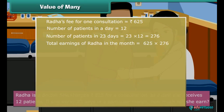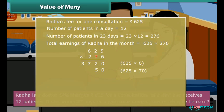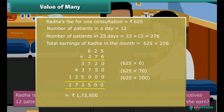Total earnings of Radha in the month is 625 × 276. Let us learn another technique of multiplication: first, multiply 625 by 6; then multiply 625 by 70; finally, multiply 625 by 200. We add the three products to get 1,72,500 rupees. Therefore, Radha earns 1,72,500 rupees.